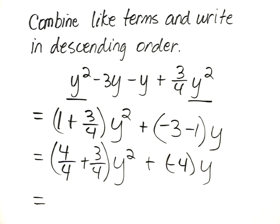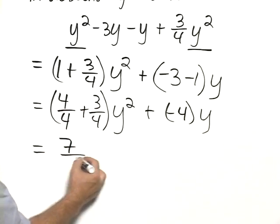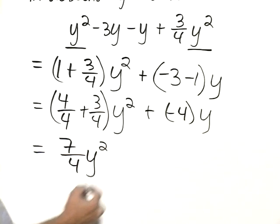And then, finally, our answer in descending order, 4 fourths plus 3 fourths is 7 fourths y squared minus 4y.